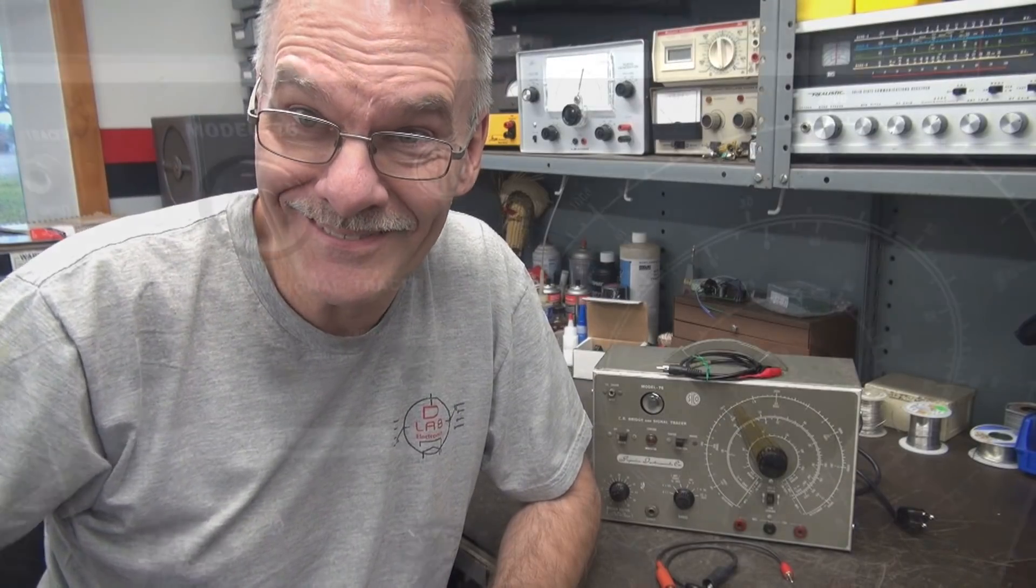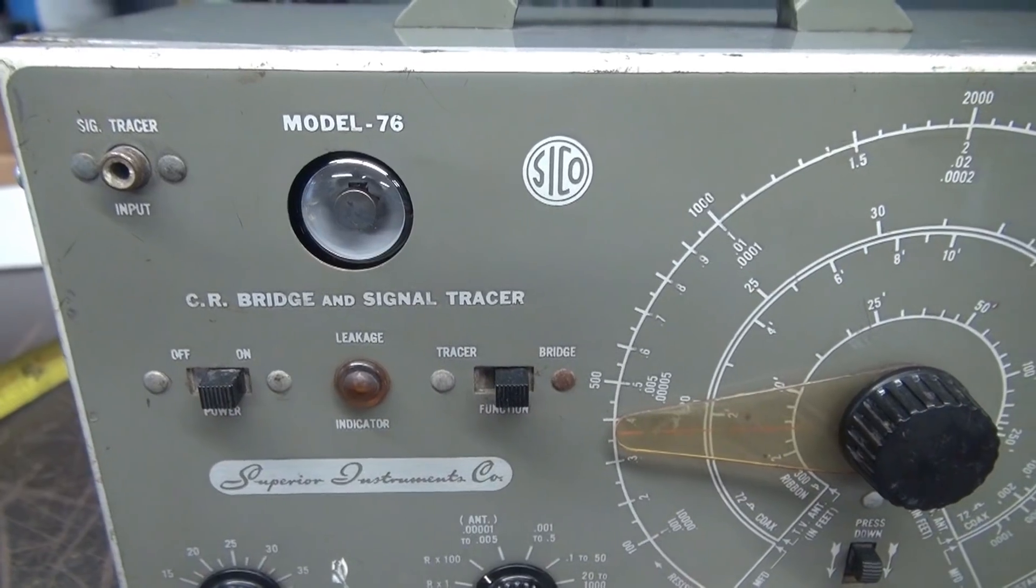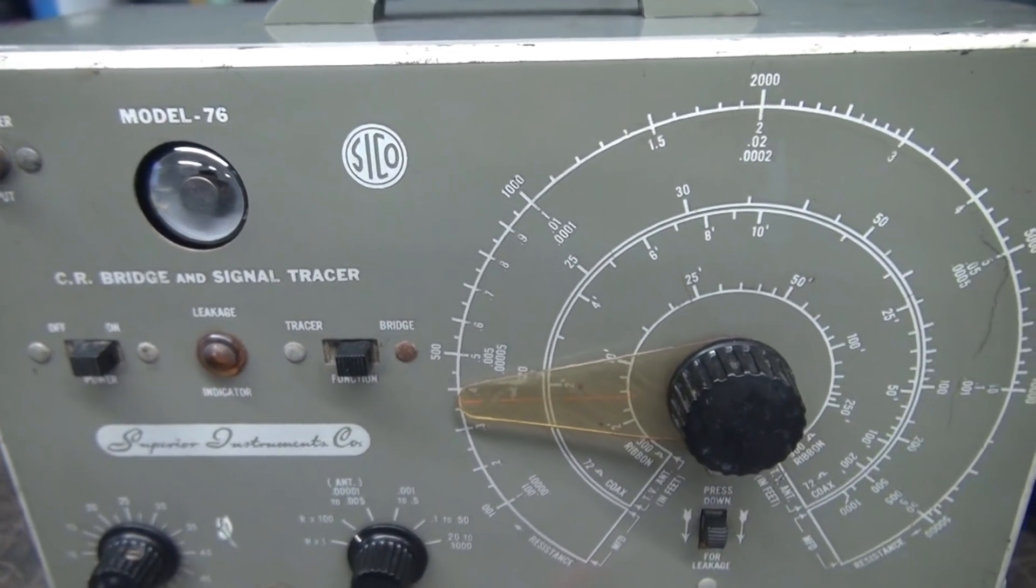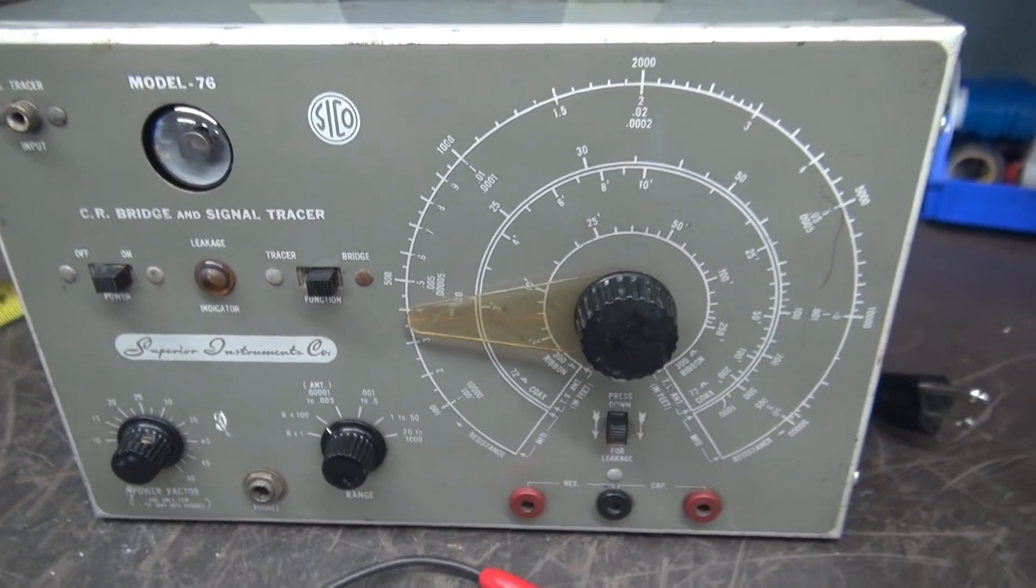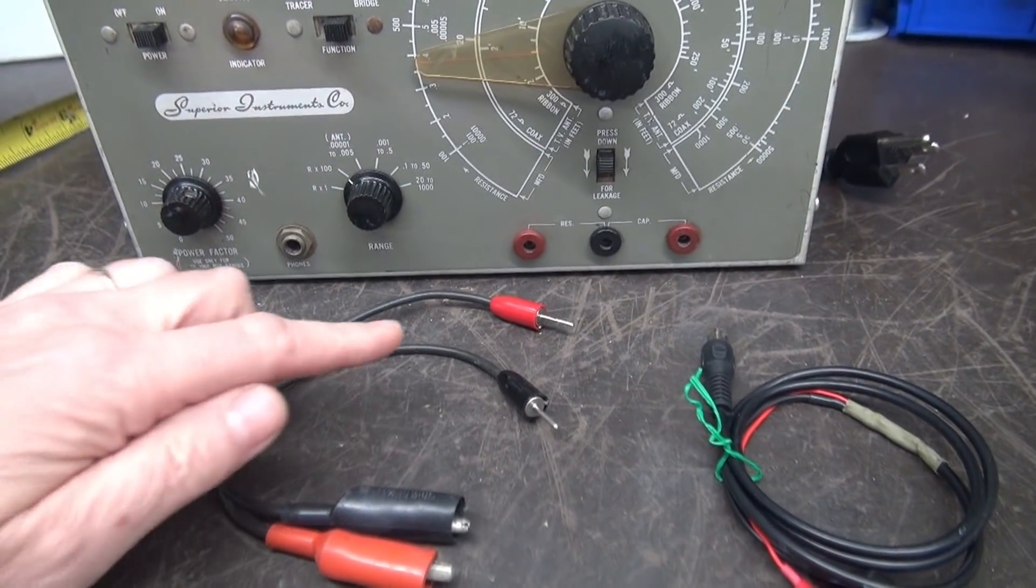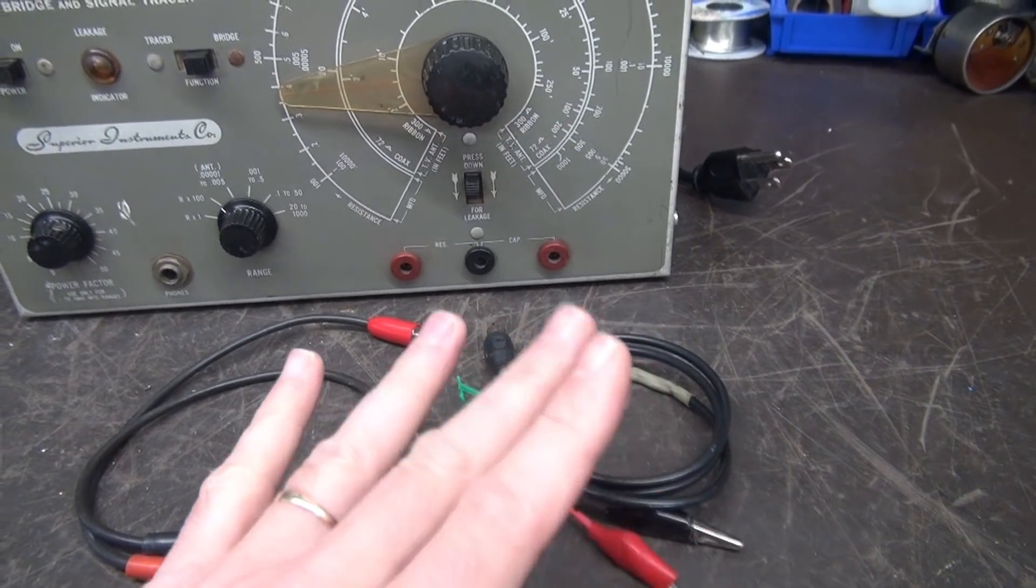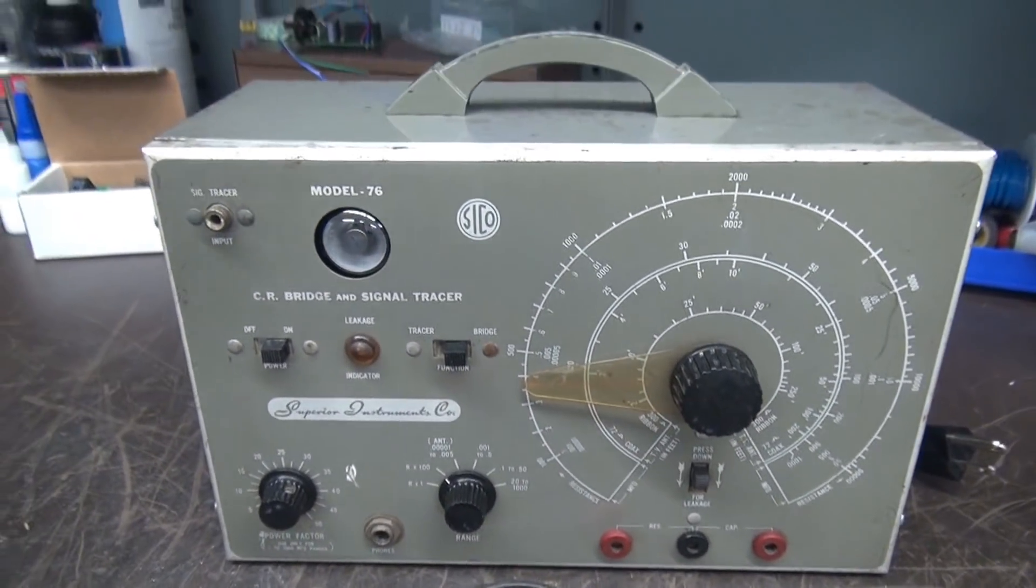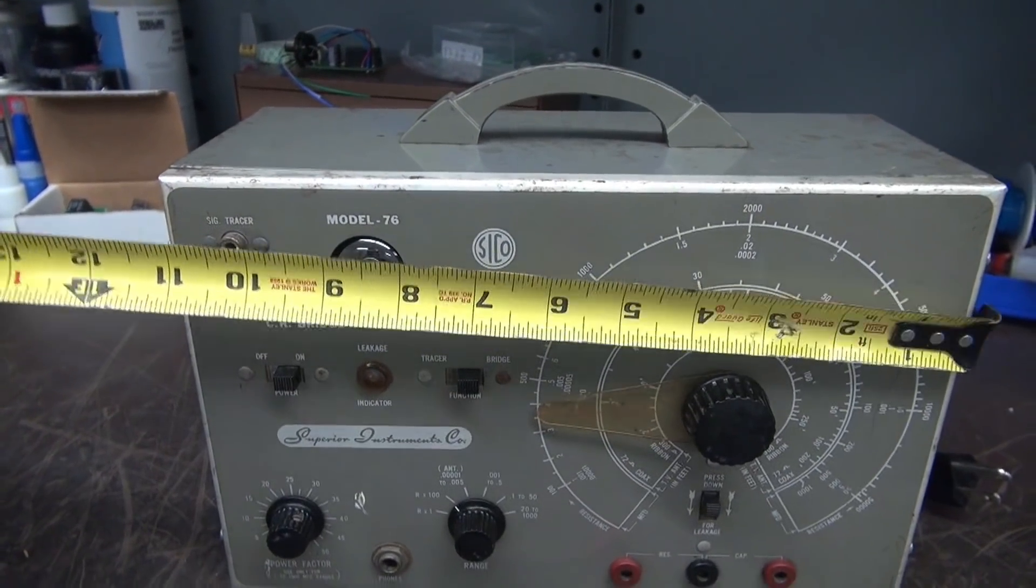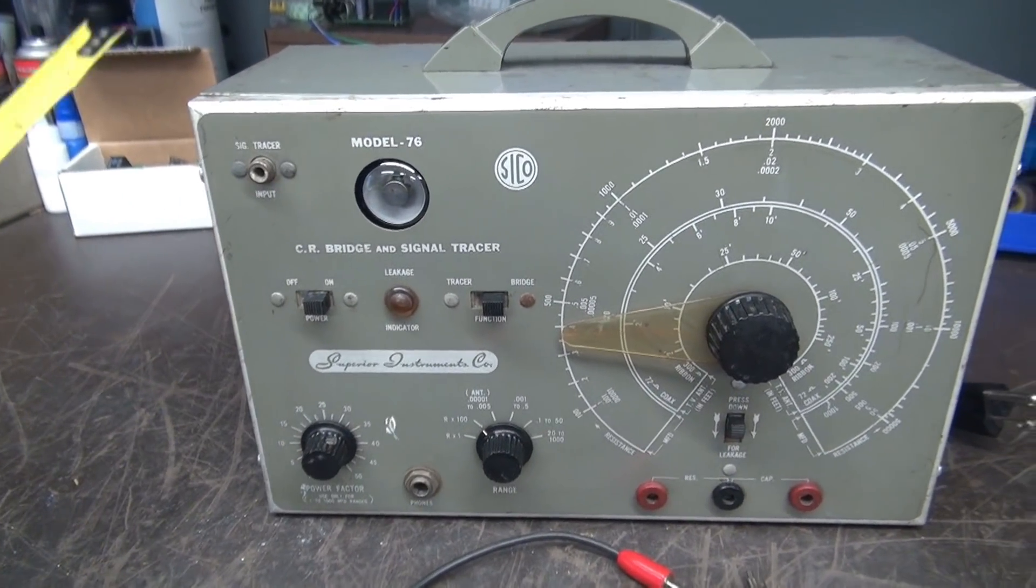Let's see if it still works. All right, here's a close-up on the front panel of the Superior Instruments model 76 bridge. Looks pretty decent cosmetically. I did get test leads with it. These look original with the little pin jacks. This looks like something that somebody made later. Measurements on this thing, it's about 11 by 7 by 4.5 or so.